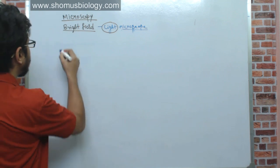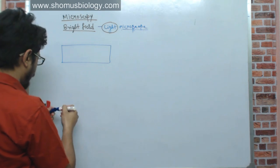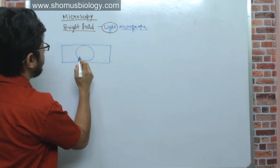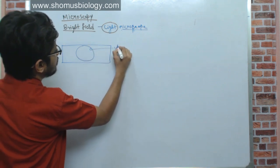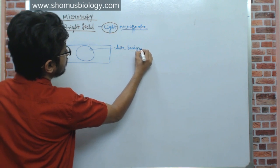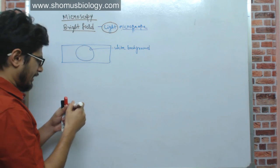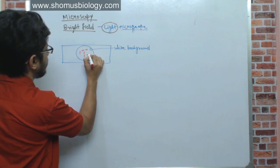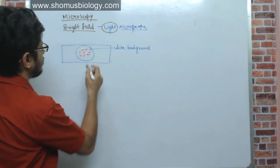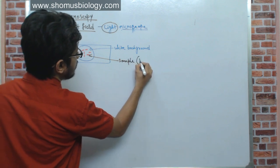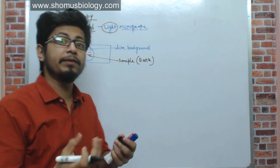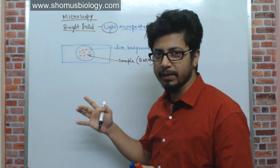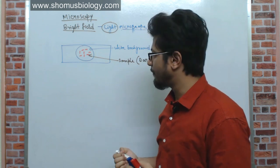In bright field microscopy, if you look at the slide and the field of view, the field of view looks like a round section. In that round field of view we see a white background. Whatever sample is present — let's assume some bacteria — the sample looks dark compared to the background. This is called bright field microscopy: the background is very bright white and the specimen is darker in color. That is why we call it bright field.